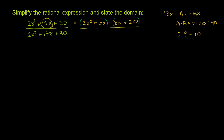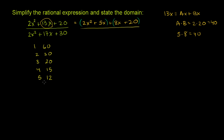For the denominator, we want two numbers that add up to 17 and whose product is 2 times 30, or 60. Since this is a positive constant, we need positive numbers. Checking factors of 60: 1 and 60 don't work; 2 and 30 don't work; 3 and 20 — their product is 60 but they don't add to 17; 4 and 15 don't work. But 5 and 12: 5 times 12 is 60, and 5 plus 12 is 17.